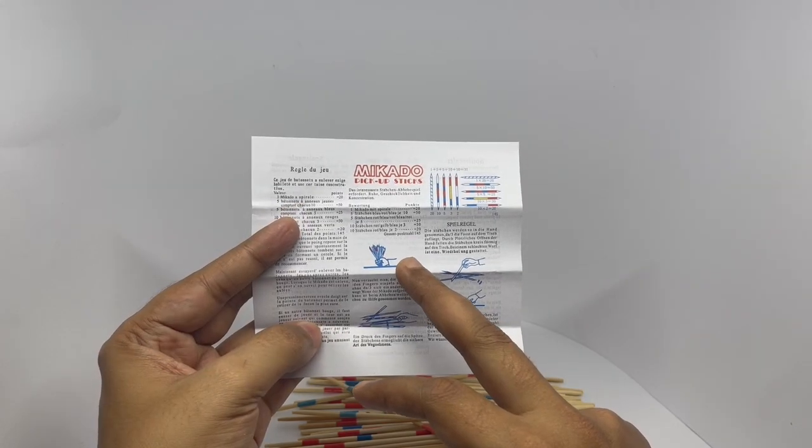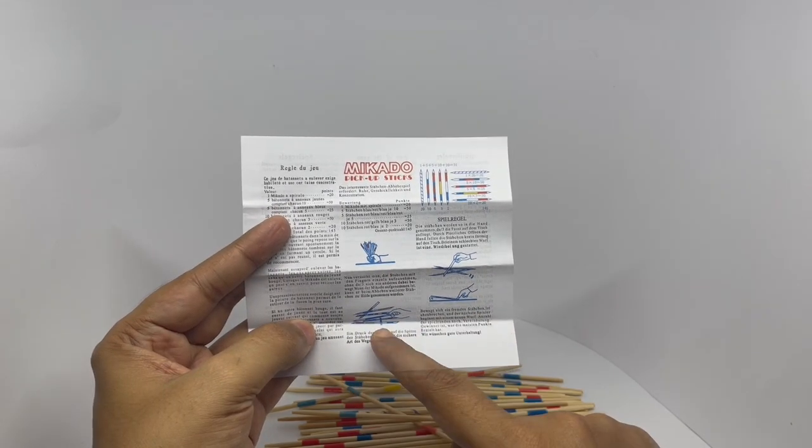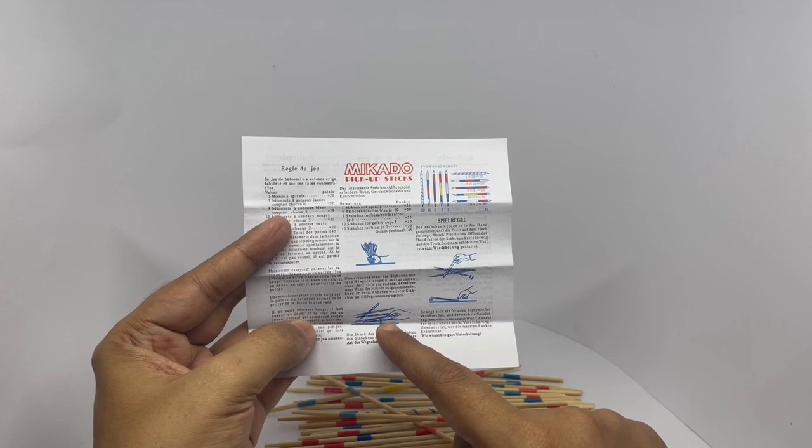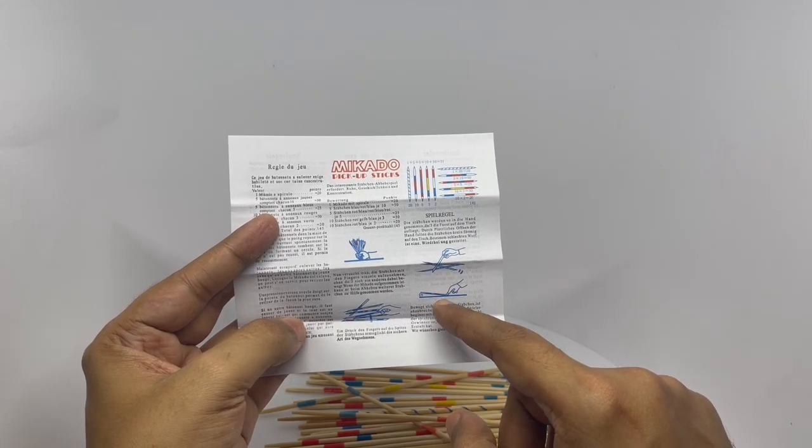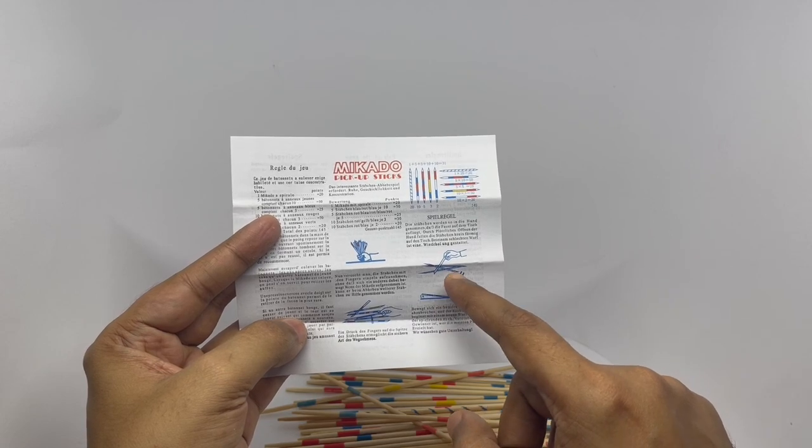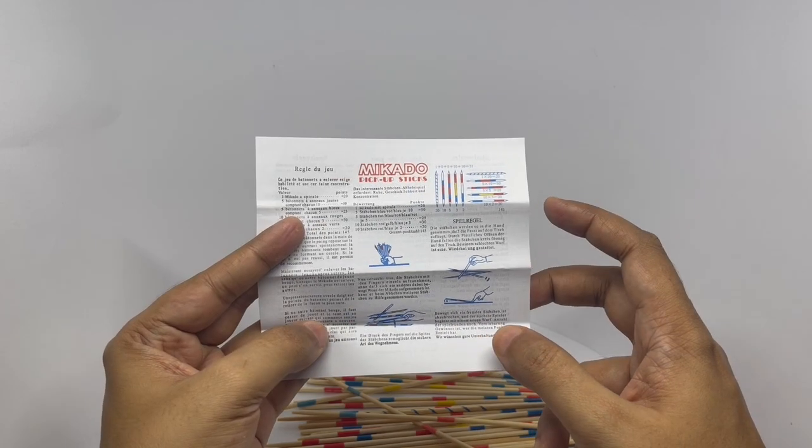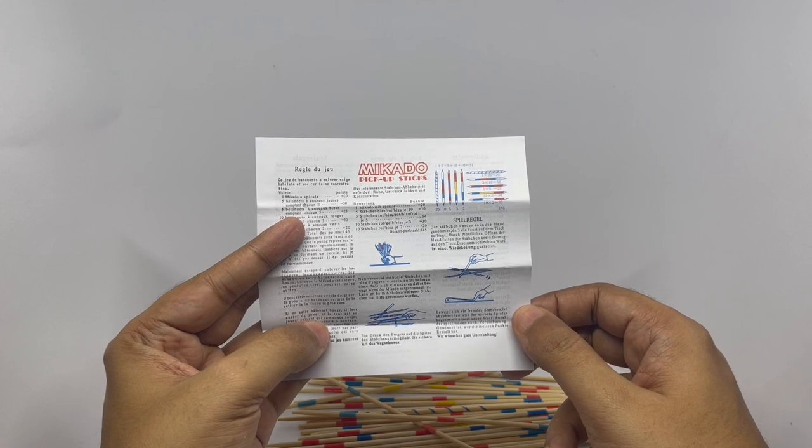You bunch them up like this and let it go. Then slowly pick up the sticks without moving the other ones. You can either use your finger or another stick. At the end of it, you total the points.